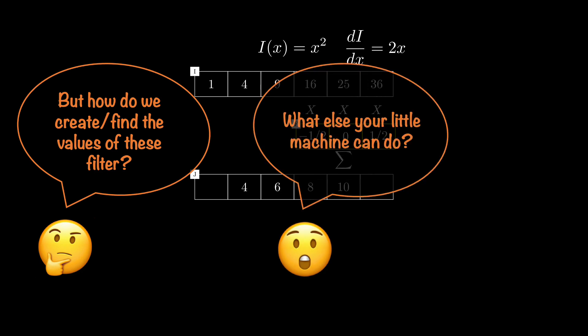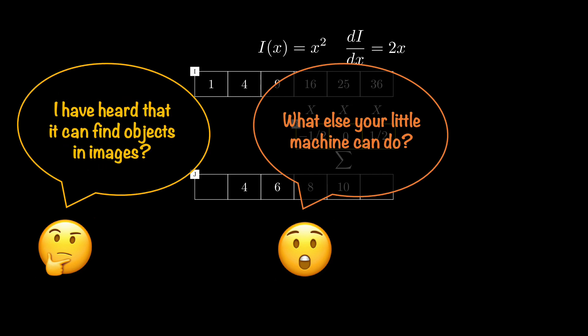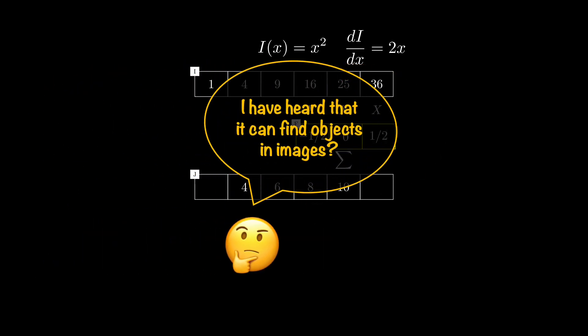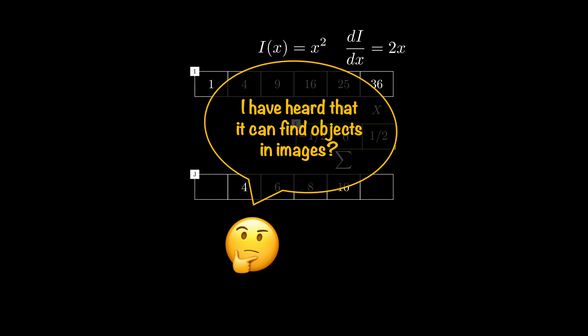What else can your little machine do? This guy is never going to be satisfied. Can this machine find objects in images? Now that is an interesting question. And yes, it can. Let's talk about using correlation to do matching vectors in the next tutorial.